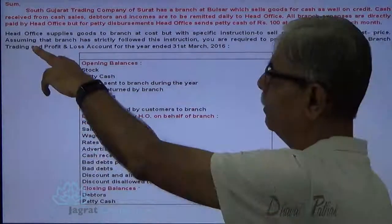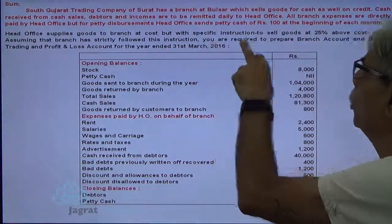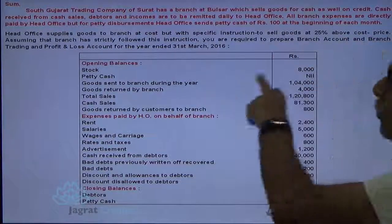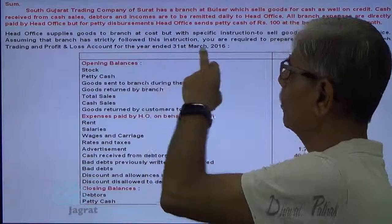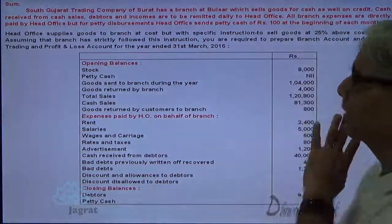Assuming that the branch has strictly followed this instruction, you are required to prepare the branch account and the branch trading and profit and loss account for the year ended 31st March 2016.